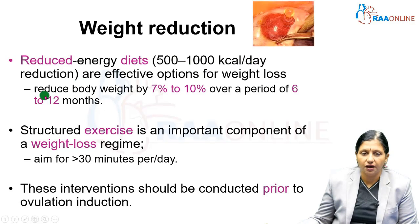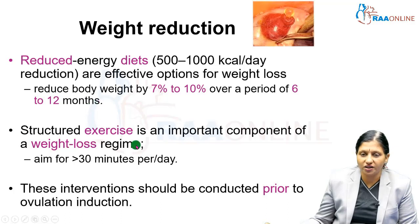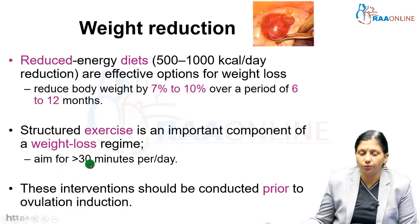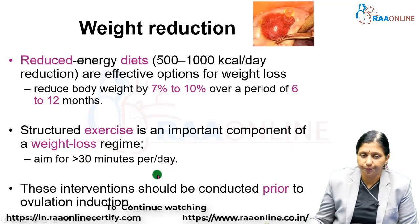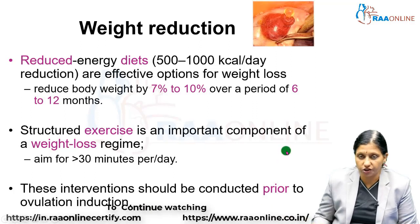Reduced energy diets of 500 to 1000 kilocalories per day reduction are effective for weight loss. The person should aim to reduce body weight by 7 to 10% over 6 to 10 months. Structured exercise — more than 30 minutes of aerobics or cardio per day — is an important component, and these interventions should be conducted prior to ovulation induction.